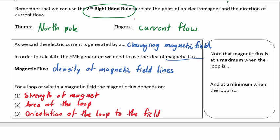And so magnetic flux is really at a maximum when the loop is perpendicular to the field. And it's at a minimum when the loop is parallel, when it catches as few of those field lines as possible.